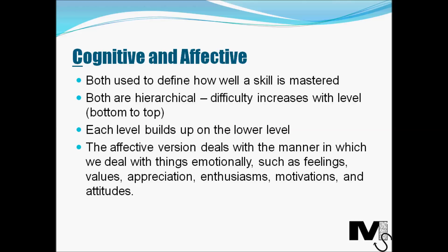Let's start with a little comparison between the cognitive and the affective versions. They're both Bloom's taxonomies and they're both used to essentially define how well a skill is mastered. Both are typically represented as a triangle, with the basic levels at the bottom and the advanced levels at the top. They're both hierarchical — you start from the base and move upward — and in both taxonomies each level builds on the one below it.